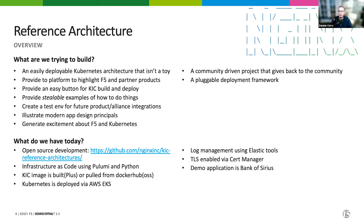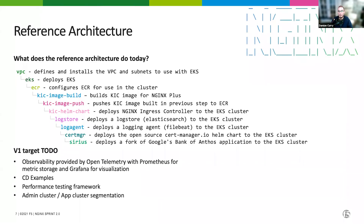The demo application we're running is what we call Bank of Sirius — a fork of the Google Bank of Anthos app — which we're leveraging as an example microservice application.